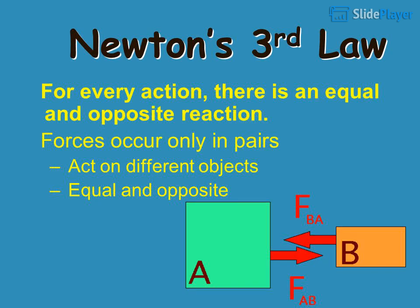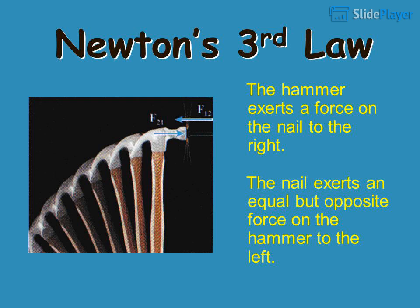Newton's third law: for every action, there is an equal and opposite reaction. Forces occur only in pairs, act on different objects, and are equal and opposite. For example, a hammer exerts a force on the nail to the right, and the nail exerts an equal but opposite force on the hammer to the left.